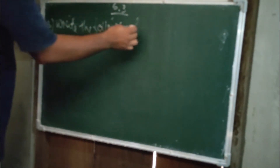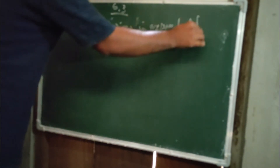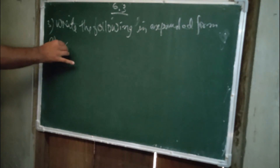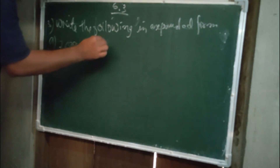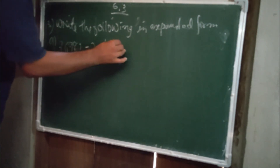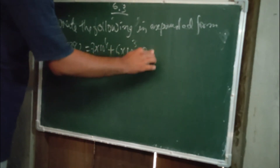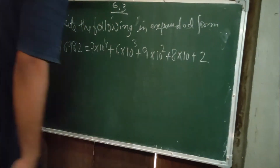Question 3: write the following in expanded form. The first number (a) is 76982. So the answer is: 7 into 10 to the power 4, plus 6 into 10 to the power 3, plus 9 into 10 to the power 2, plus 8 into 10, plus 2. Understood? Clear.